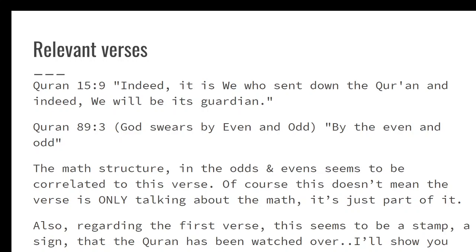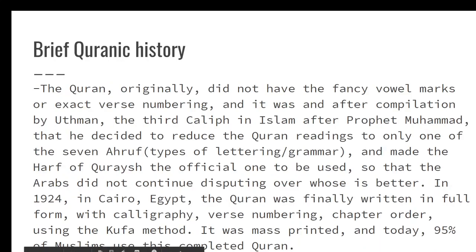And also, tied into this, when you actually see the math for yourself, it kind of shows you that the text has been watched over in a very unusual way. But first, let's clear out some things that people might bring up. So, first of all, the exact numbering system used for the Quran, and how it's recited, and where the ayahs start and end. This wasn't determined completely until in 1924 in Cairo, Egypt.